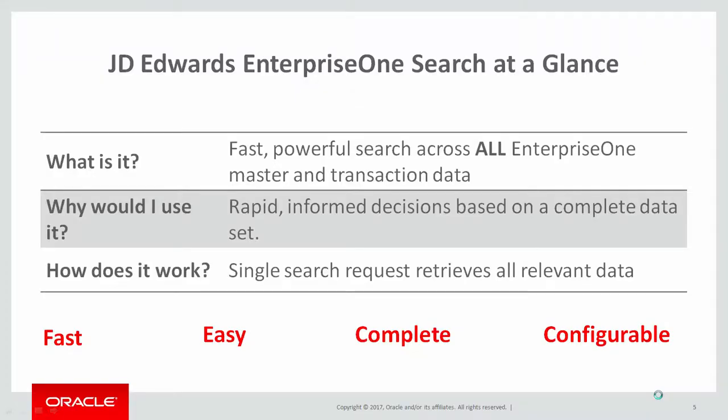Enterprise One's search is a powerful new tool to enable you to retrieve information easily and quickly to help you make decisions based on accurate and complete data. And, as a user-defined object, Enterprise One's search can be configured by your citizen developers without IT assistance.